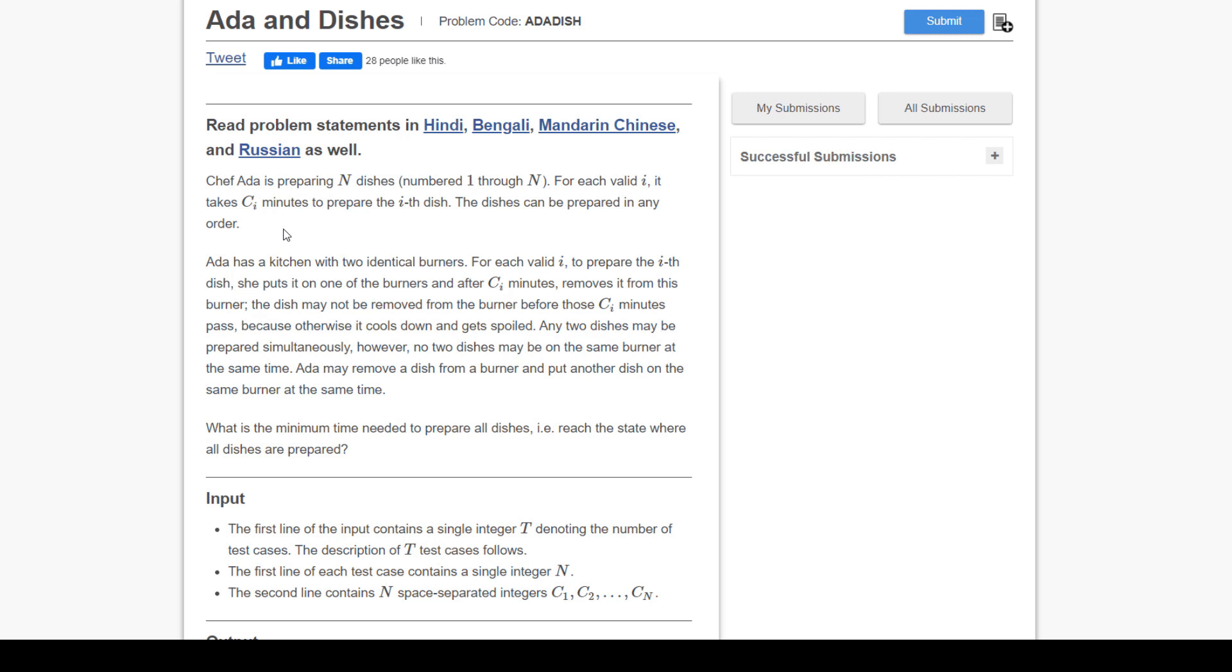Ada may remove a dish from a burner and put another dish on the same burner at the same time. If one dish takes five minutes and another takes two minutes, the two-minute dish will finish and you can put another dish on it. What is the minimum time needed to prepare all the dishes?